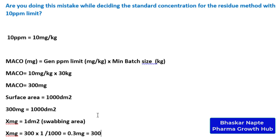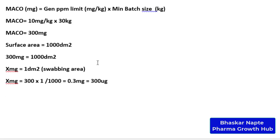So 300 microgram of residue is present in 1 dm² of area. Or I can say each swab will consist of 300 microgram of residue, because 1 dm² is the swabbed area and that content gets carried onto the swab. Ideally speaking — not accounting for recovery — 300 microgram will be carried forward onto the swab, so each swabbed sample will contain 300 microgram of residue.